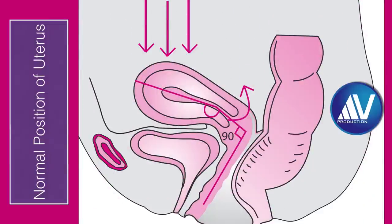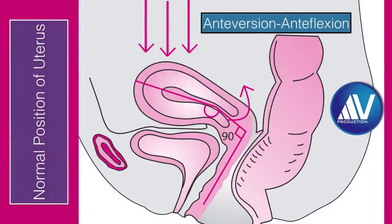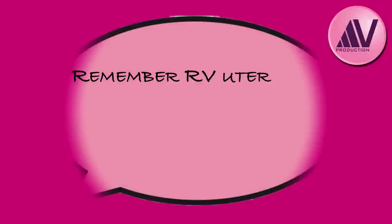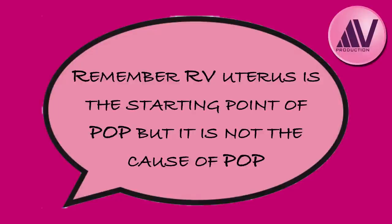The normal position is antiflexion of 120 degrees and anteversion of 90 degrees. In this position, if a force were to be exerted from above on the superior surface of the body of the uterus, there would be a retrograde pull on the cervix upwards and backwards, thus shutting off the potential vaginal cavity and preventing uterine prolapse. On the other hand, in the mid-post or retroverted positions of the cervix, which is aligned with the vagina, any increase in intra-abdominal pressure will cause descent of the cervix and uterus into the vagina, leading to Pelvic Organ Prolapse. An important take-home message is that a retroverted uterus is the starting point of Pelvic Organ Prolapse, but it is not the cause of Pelvic Organ Prolapse.